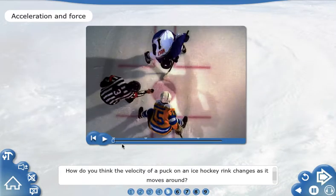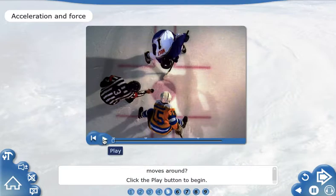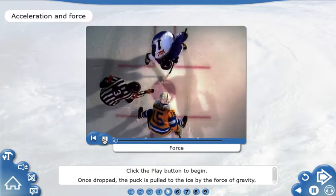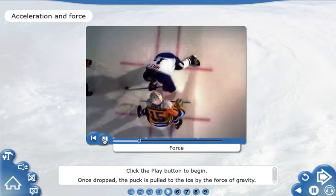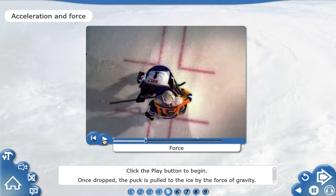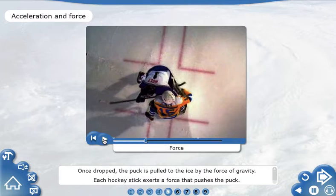How do you think the velocity of a puck on an ice hockey rink changes as it moves around? Click the play button to begin. Once dropped, the puck is pulled to the ice by the force of gravity. Each hockey stick exerts a force that pushes the puck.